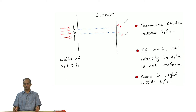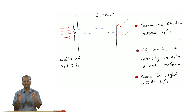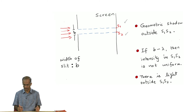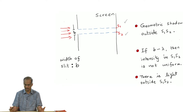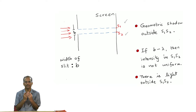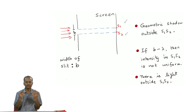On the other hand, what is generally seen is that under some conditions there is in fact light falling outside of S1 and S2. Secondly, if your wavelength of light is approximately equal to the size of the slit b, it is also noticed that the intensity of light, which we expected to be uniform, is not really uniform within S1 and S2. There are some bright and dark fringes - it is not uniformly distributed inside S1 and S2.